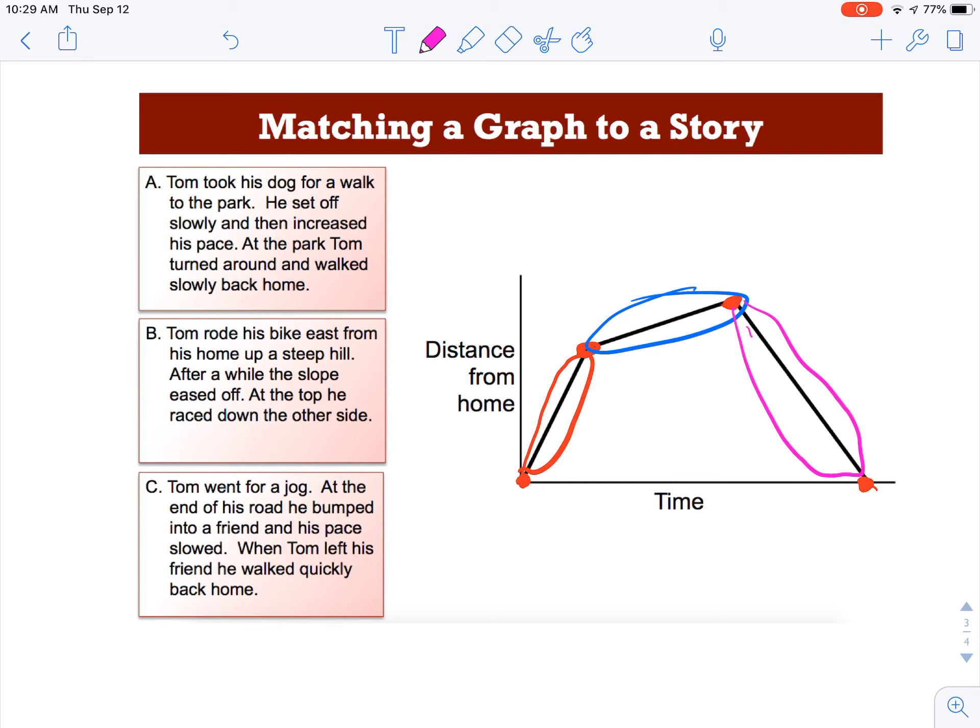Tom took his dog for a walk to the park. He set off slowly, and then increased his pace. So that means he started off slow, and then went fast. Well, that's not true. It looks like he started off fast, and then went slow, and then went home. So I don't agree with A. He didn't start off slow, and then pick up his speed.